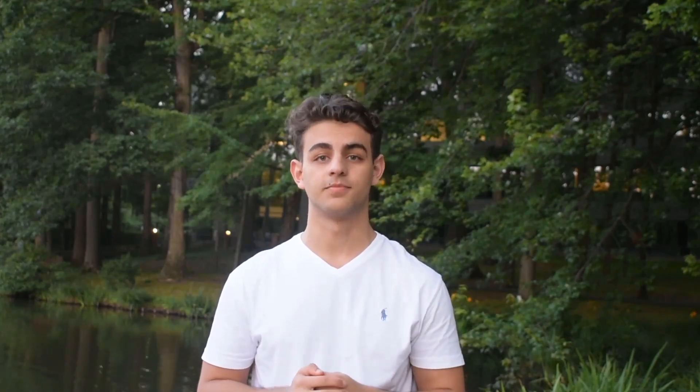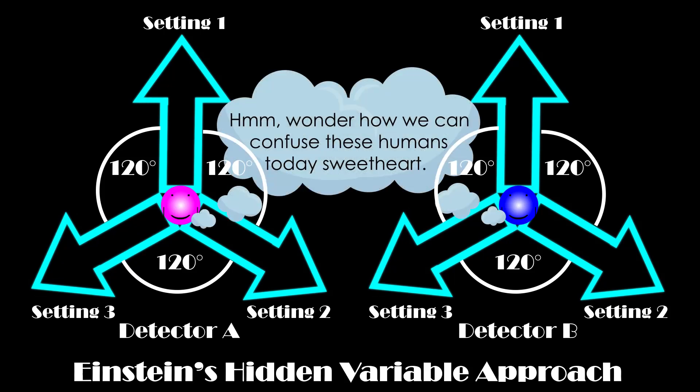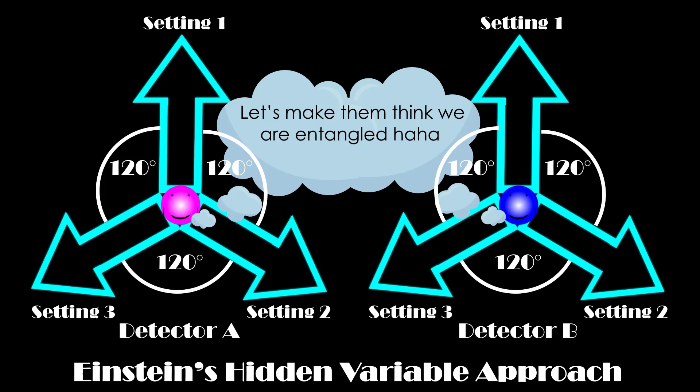Then came John Bell, a scientist that devised an experiment to test Einstein's theory. Consider two detectors, each in one of three settings, which are chosen to change at random. Consider hidden variables as some sort of plan which is required to give opposite spins only when the pair is measured in the same setting.